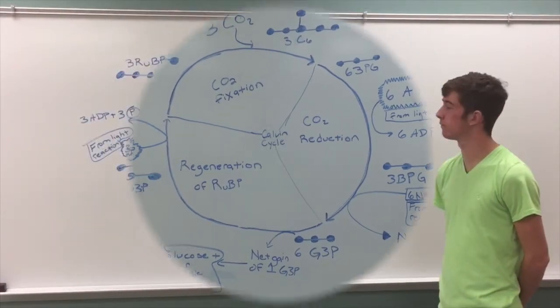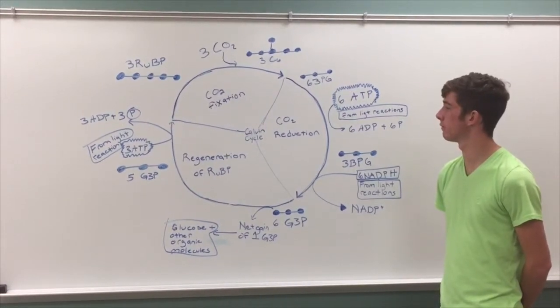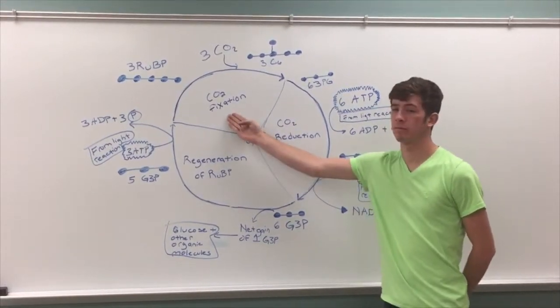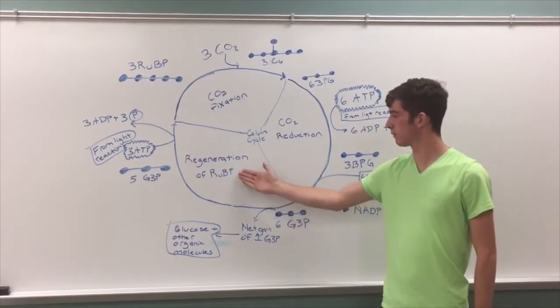Calvin cycle reactions. The Calvin cycle is divided into three portions: CO2 fixation, CO2 reduction, and regeneration of RUBP.